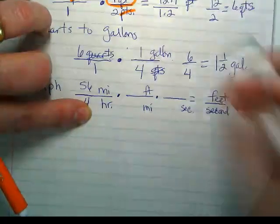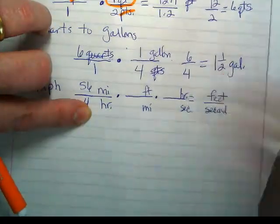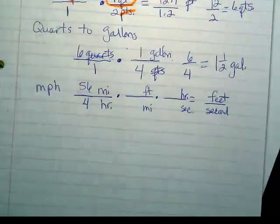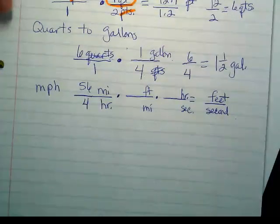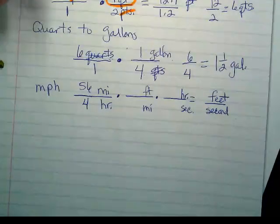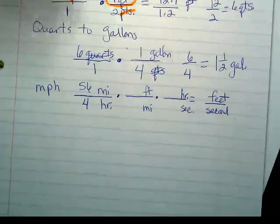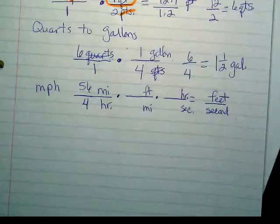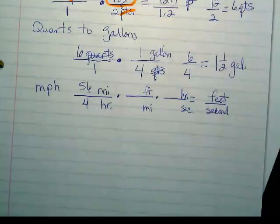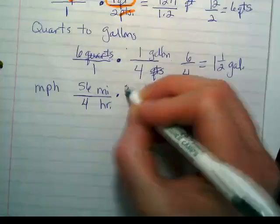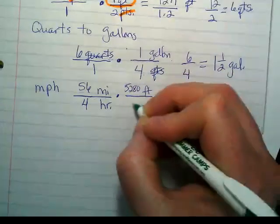And then we're going to fill it in with the numbers that we know, or the numbers you have to go look up. Because if you don't teach math, you may not know that there's 5,280 feet in one mile. A fact I just happened to know. 5,280 feet, one mile.